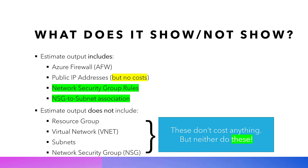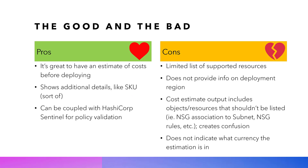Looking at what I liked: it's absolutely awesome to have a cost estimation before you actually execute your deployment — a really great feature. I also liked how it showed additional details like the SKU for the Azure Firewall, identifying it as a standard tier rather than basic or premium, providing some useful detail about the specific resource being deployed.